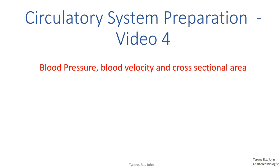This is going to be a detailed video with a lot of important information. As always, you need to make your own notes and present them in a way that is useful to you for learning and revision. I'm going to start by showing a graph that shows the changes in blood pressure, velocity, and cross-sectional area, give a description of the changes first, and then go into the explanations as to why and how these factors change throughout the circulatory system.